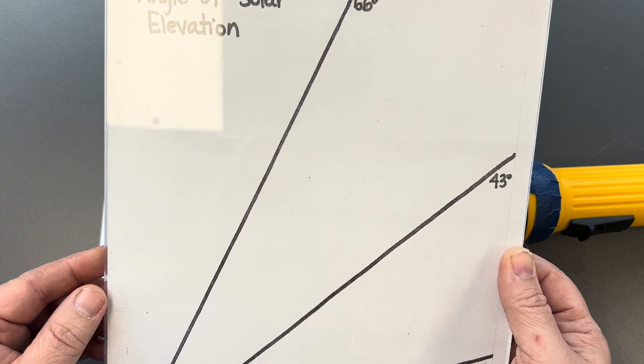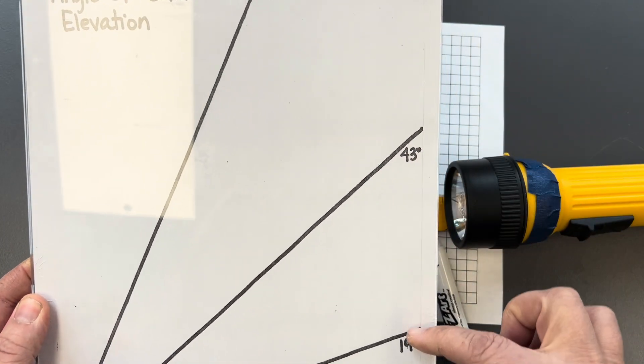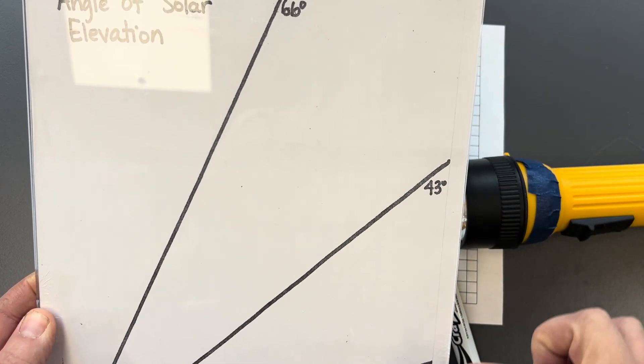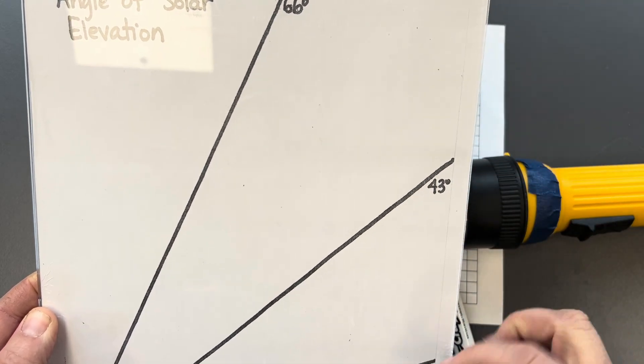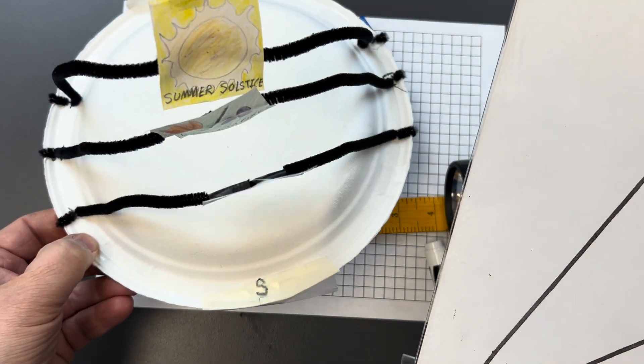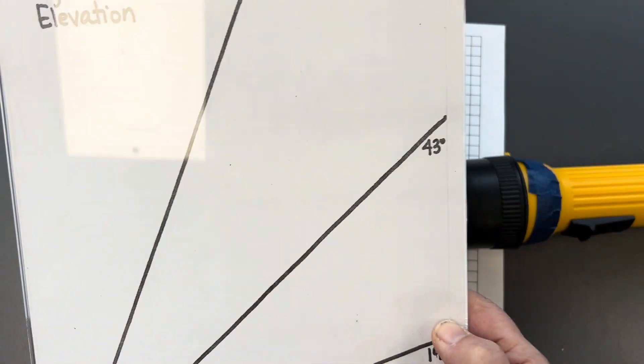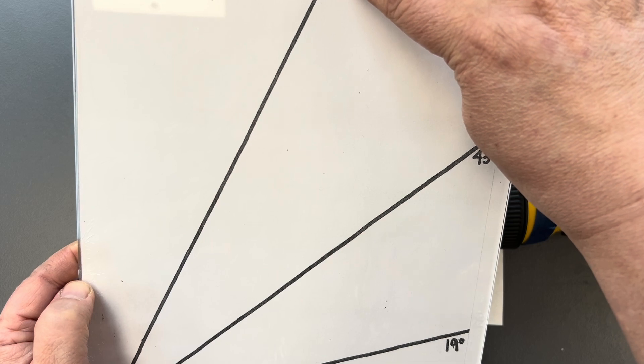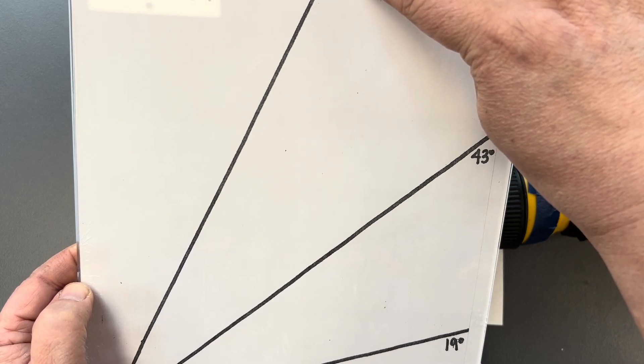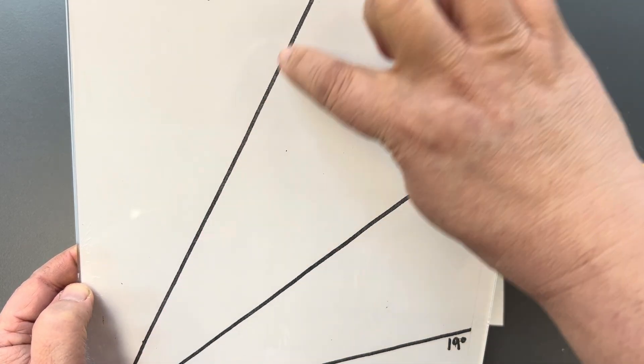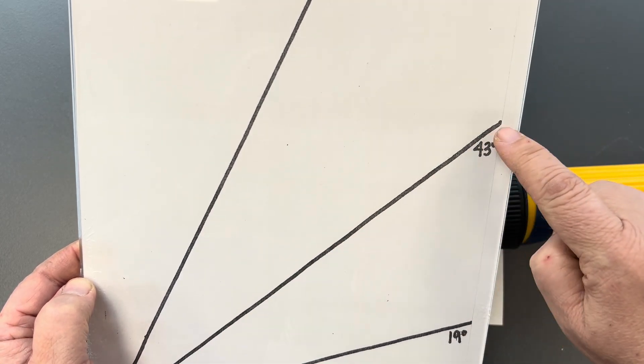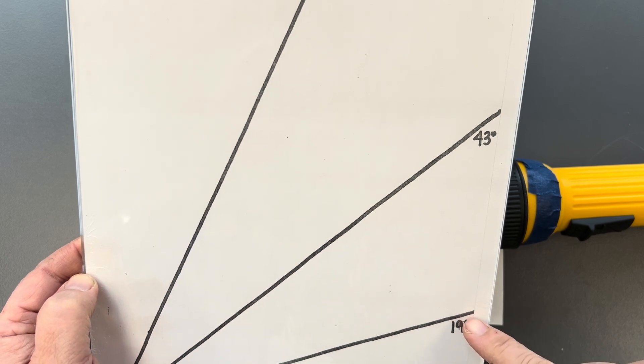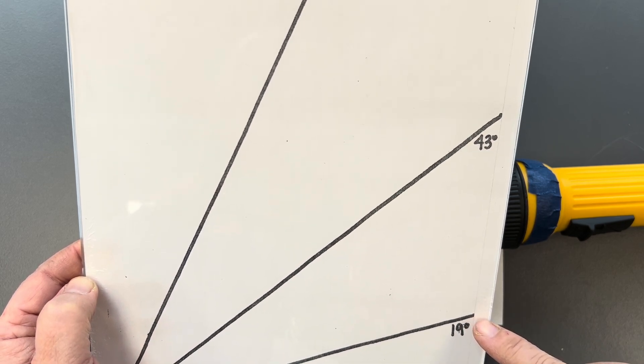All right, so I've got this angle of solar elevation, and there's three different measurements here. There's 66 degrees, 43 degrees, and 19 degrees. And these measurements all correspond in general with this model, which is showing us that in Seattle, on our summer solstice, the sun is 66 degrees above the horizon. During the fall and spring, there's a 43 degree angle. And during the winter, our sun only gets to be 19 degrees above the horizon.